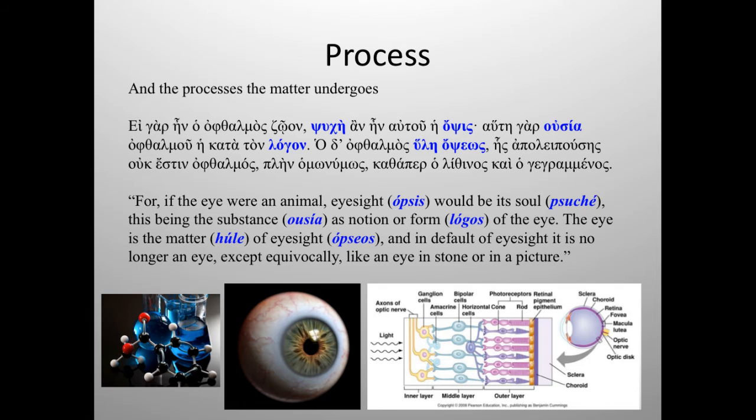And Aristotle has another fantastic analogy of this importance of the process in the description of the soul. And he uses this analogy of an eye, both the eye and of eyesight. [Greek text read aloud]. And I think this is just a great analogy, because it shows how a soul is not just what it is, but also what it does. So an eye, for example, an eye is material, but it's also a process.